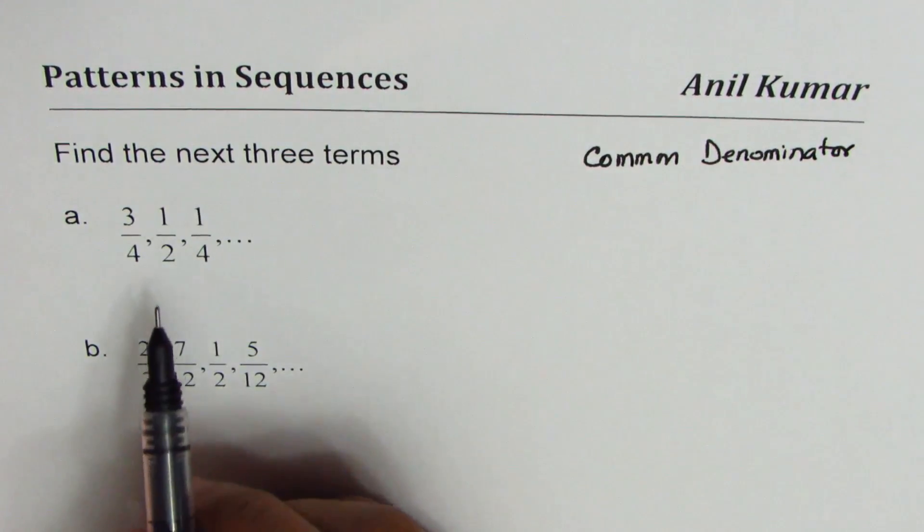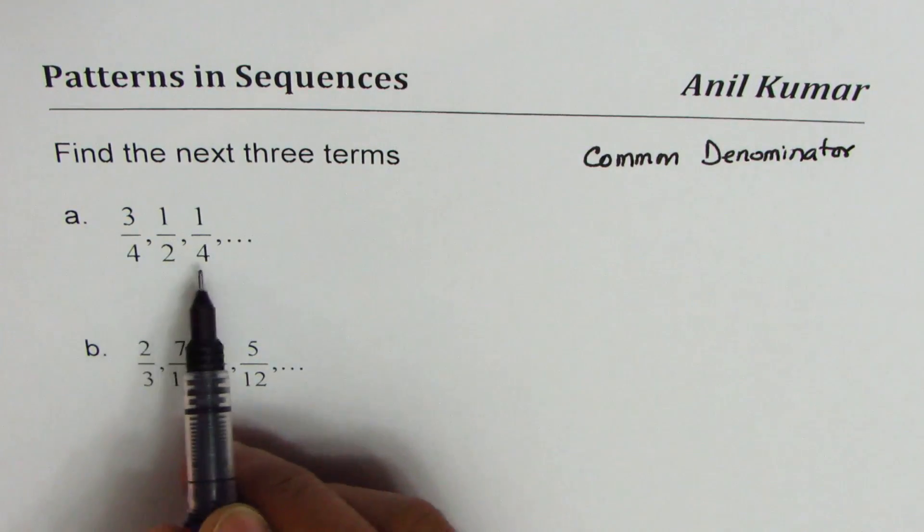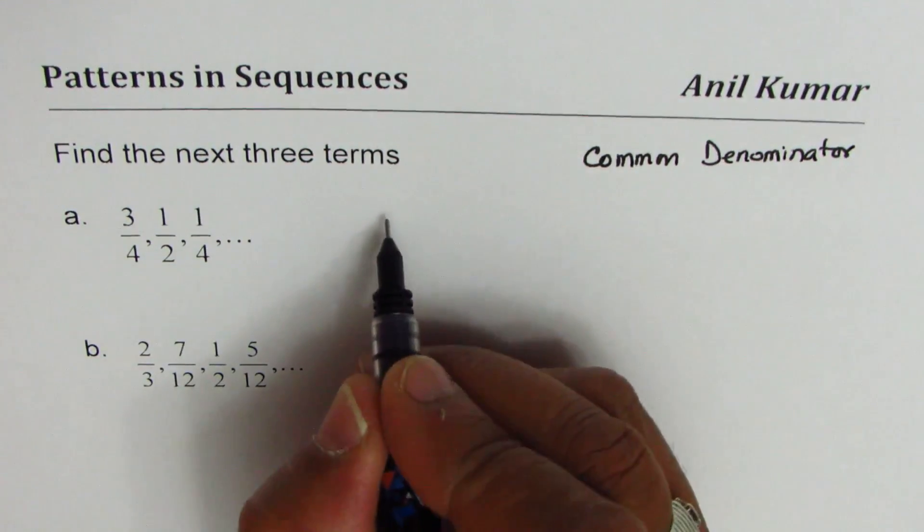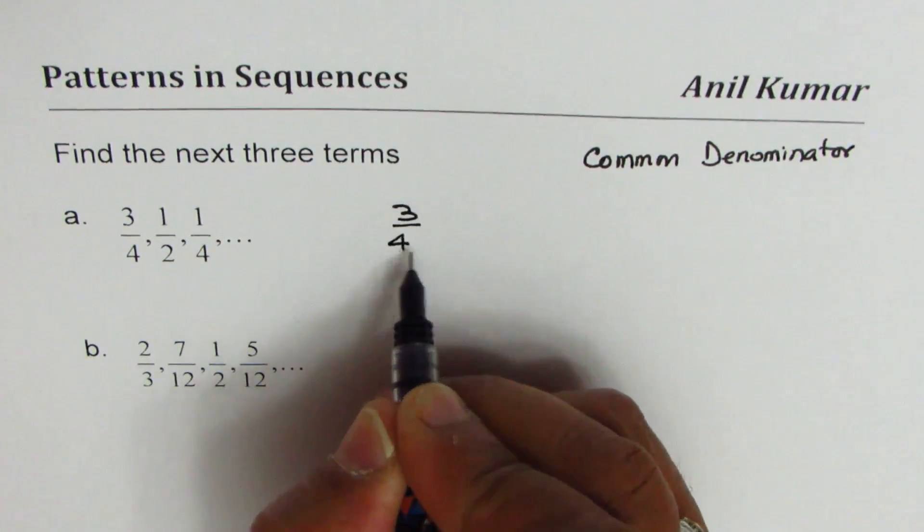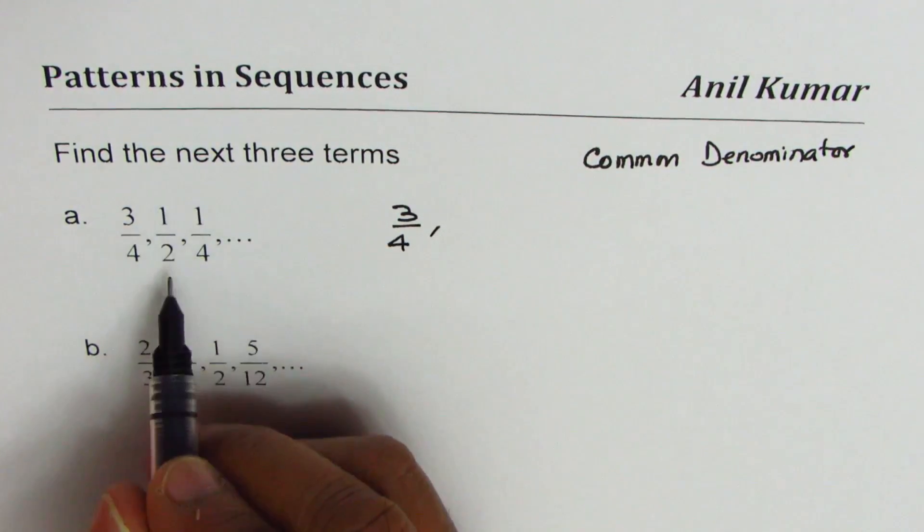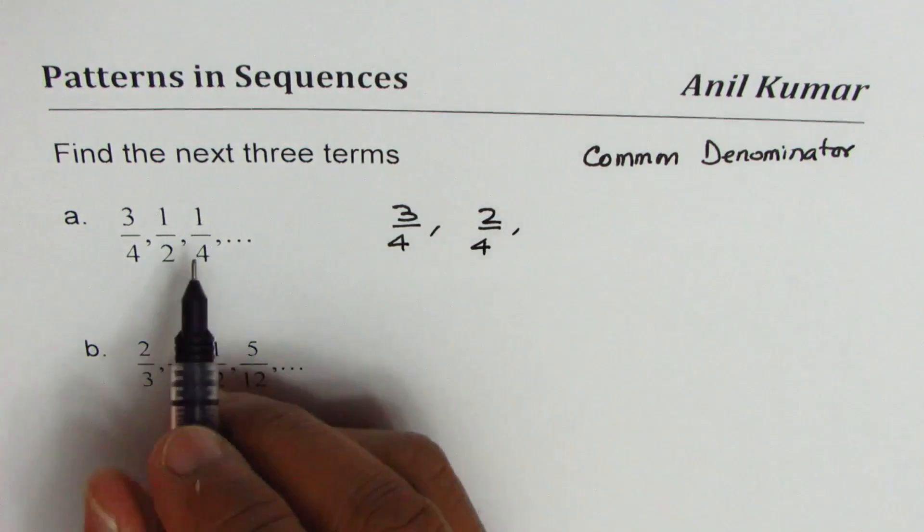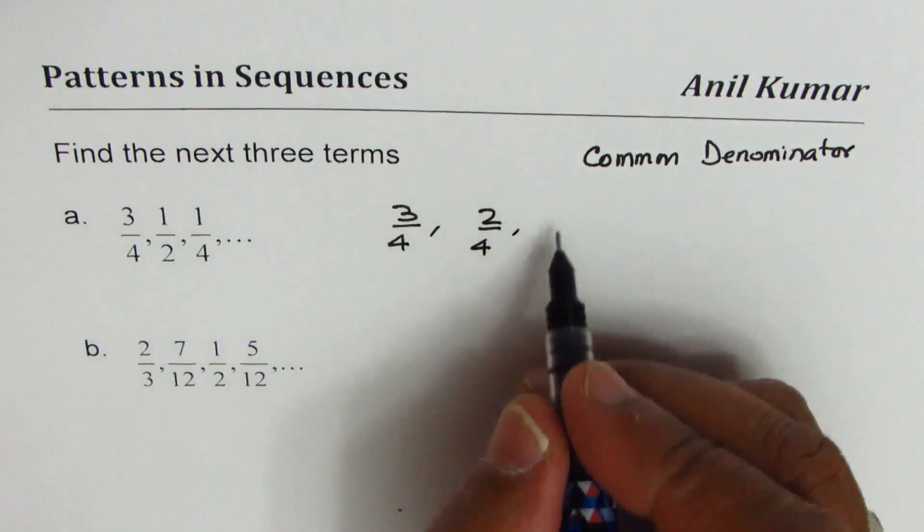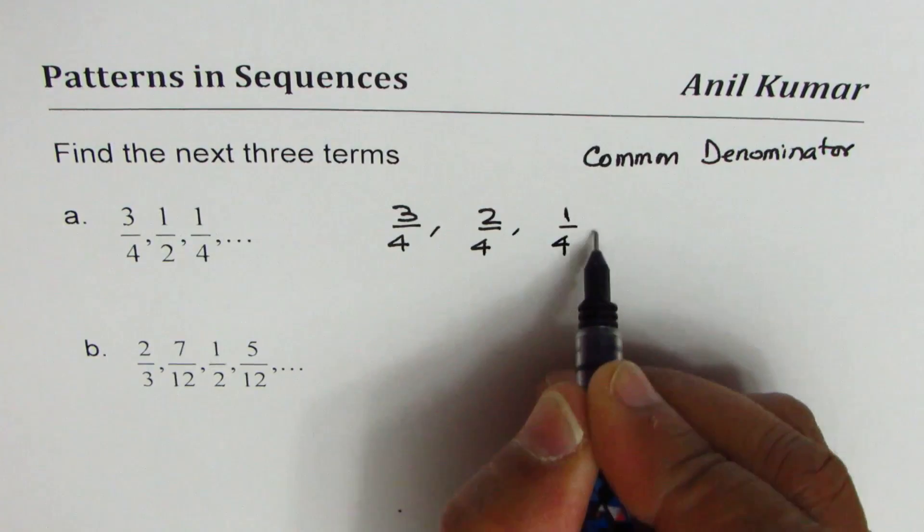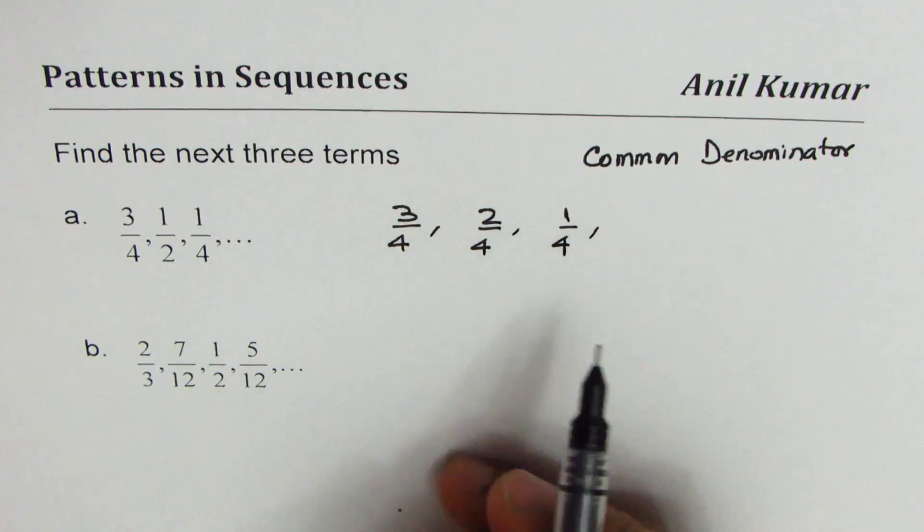In the first case, we could make the denominator 4. So we have 3/4. The second term, if I multiply by 2 both numerator and denominator, I get 2/4. The third term is already 1/4.